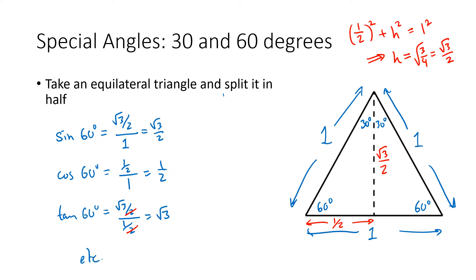As we talked about in the last video, once we know the value of one of these trigonometric functions, we can use the fundamental identities to figure out the other five. I'll just do sine, cosine, and tangent here since those are the more common functions, but you could also figure out cotangent, secant, and cosecant using the methods discussed in the previous video.